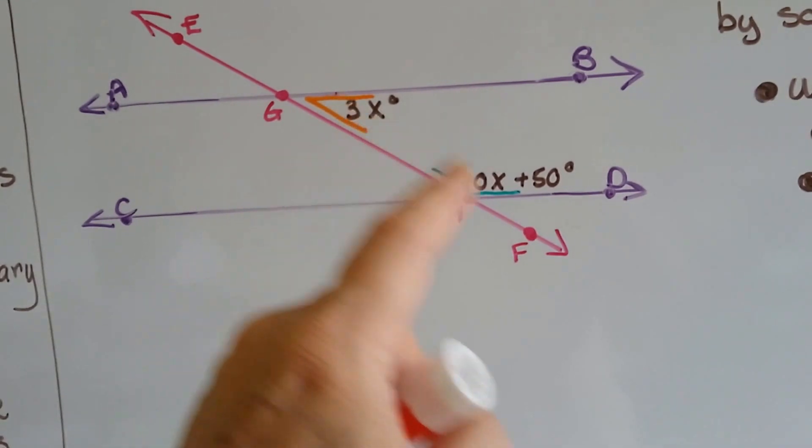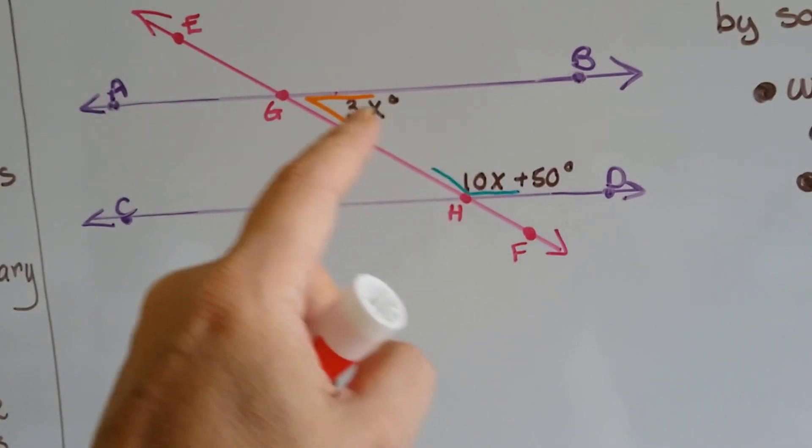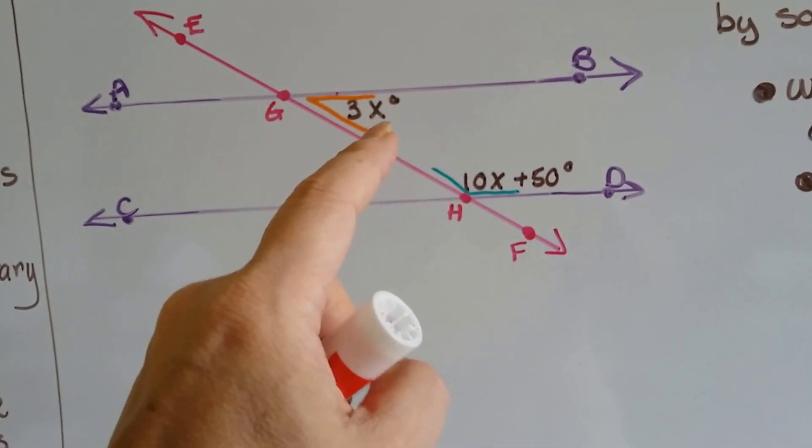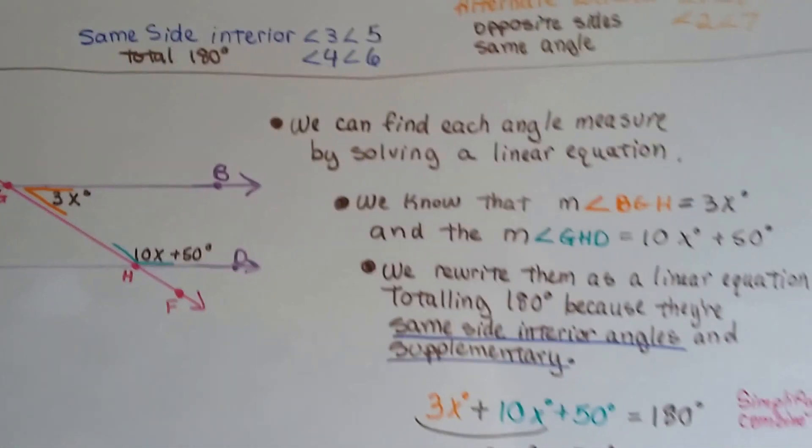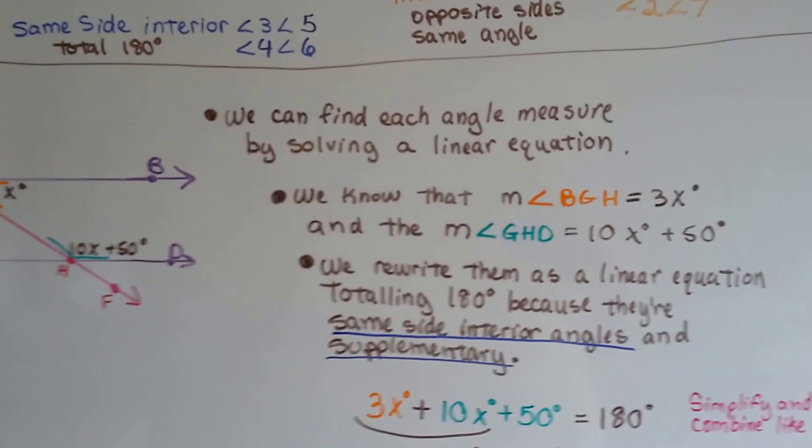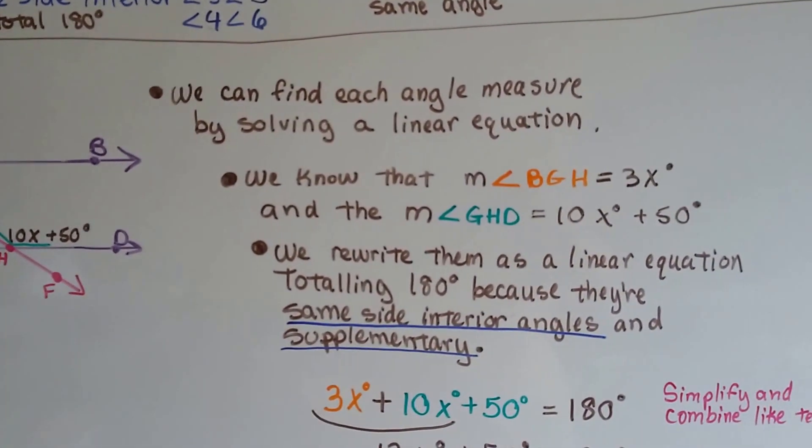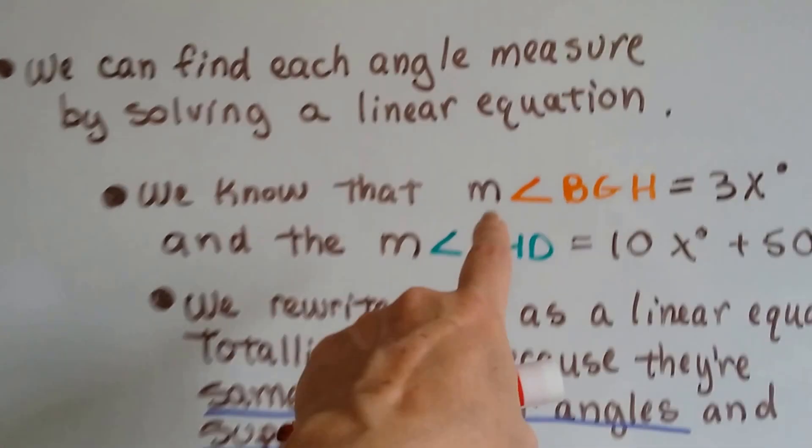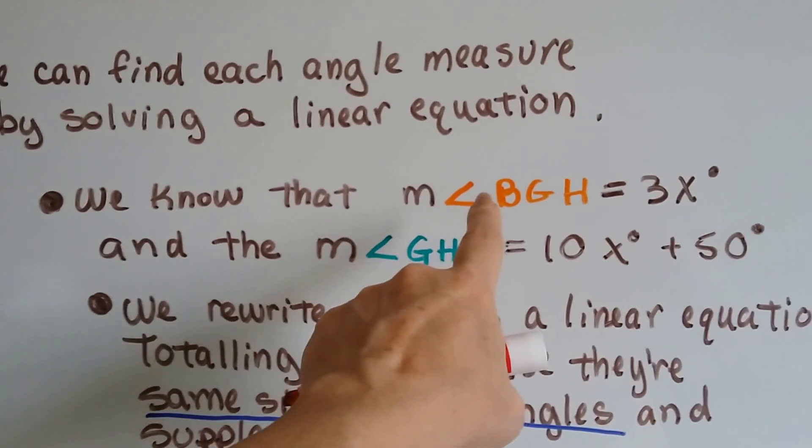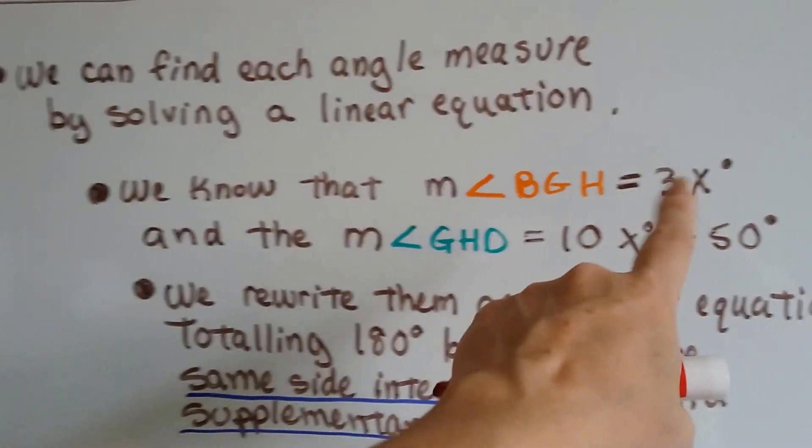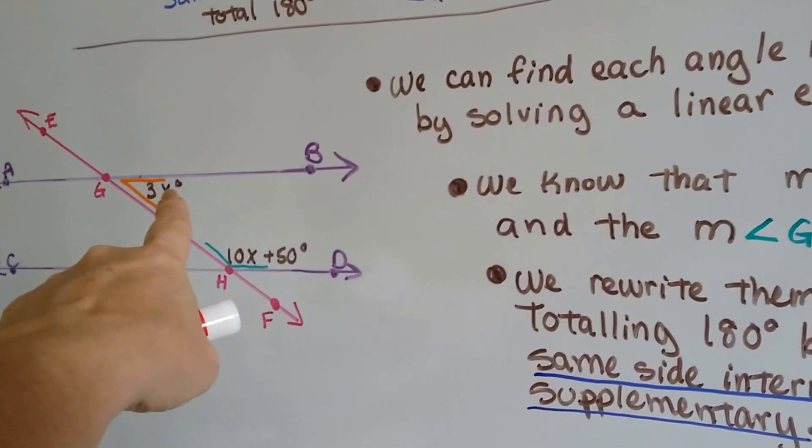We know because they're same-side interior angles, the rule says they have to equal 180 degrees. So we can find each angle measure by solving a linear equation. The measure of angle BGH is 3x. It tells us right there.